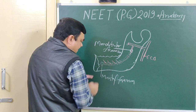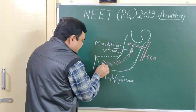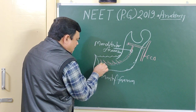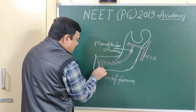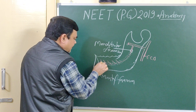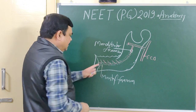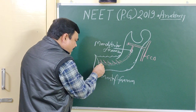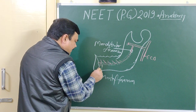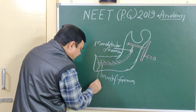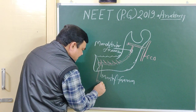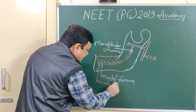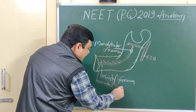It passes through the mandibular foramen and is known as the mental branch. This is the mental branch.